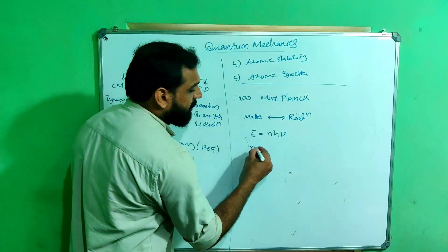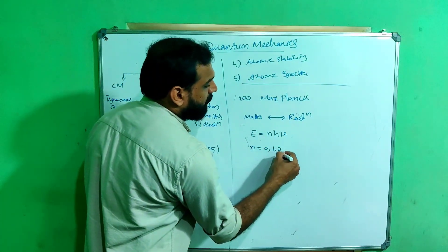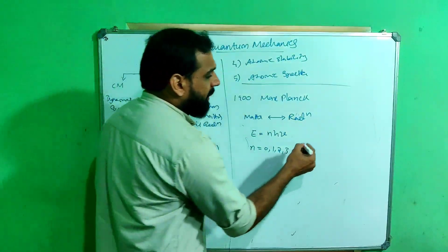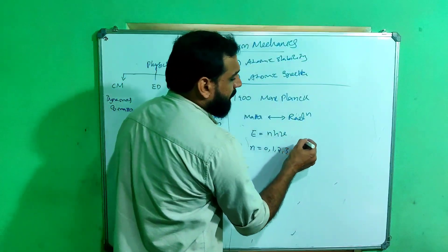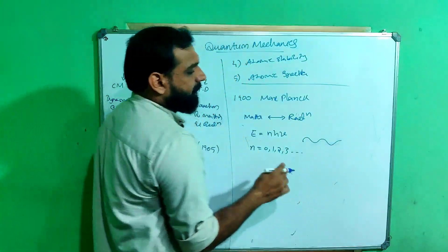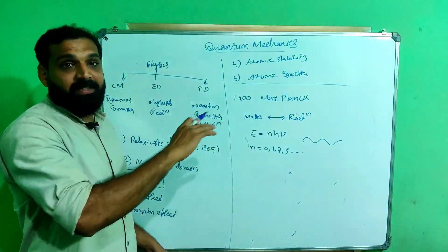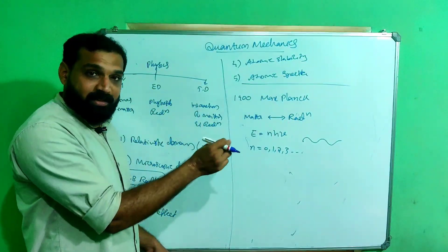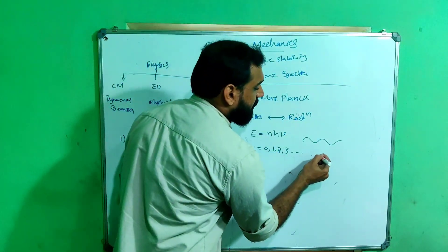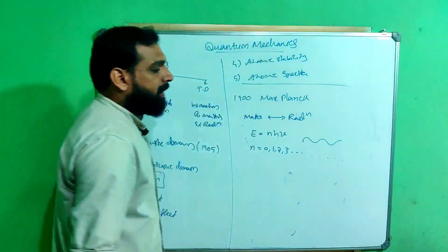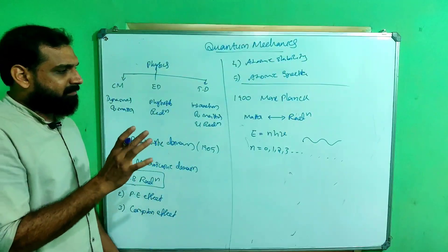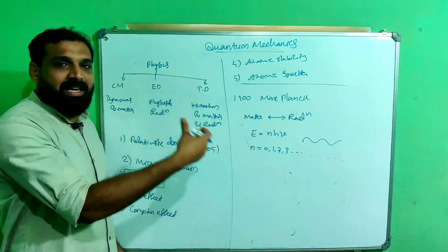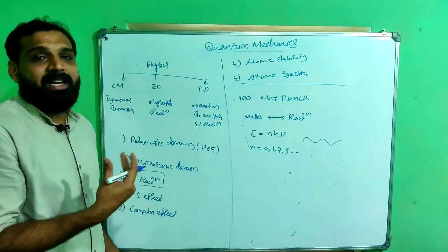He suggested that electromagnetic radiation exchanges energy with matter in packets of energy called h·ν, where N equals 0, 1, 2, 3, and so on. In short, till then electromagnetic waves were considered continuous phenomena, and Max Planck proposed that they are not continuous but discrete. To distinguish continuous and discrete: consider water flowing from a tap continuously — that is continuous.